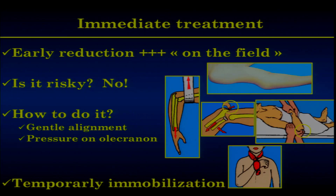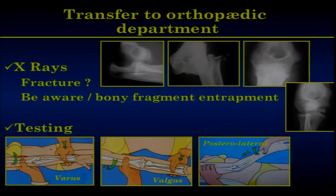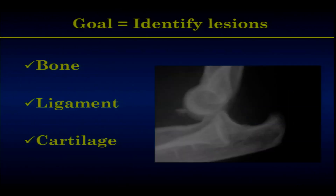There are tricks to learn for reducing elbow dislocation. Every judo professor — not just doctors or physios — knows how to do it; they reduce elbows on the tatami. It's quite easy with gentle manipulation on the olecranon. Afterwards, immobilize the elbow temporarily and transfer the patient to the orthopedic department. Make an X-ray, check if the dislocation is reduced, check for fractures, and be aware of bony entrapment. At that time, perform clinical testing in varus and supination, in valgus, and for posterior lateral instability — to identify the lesion type.